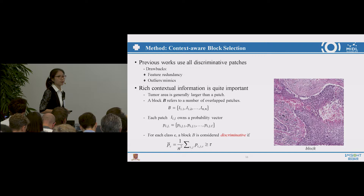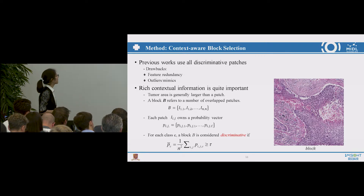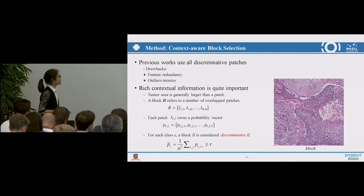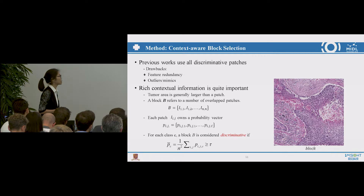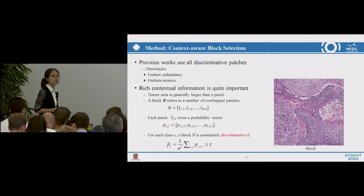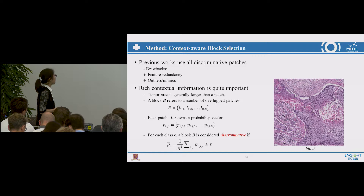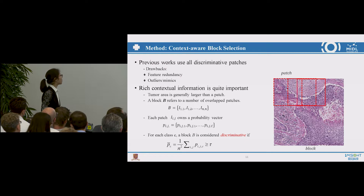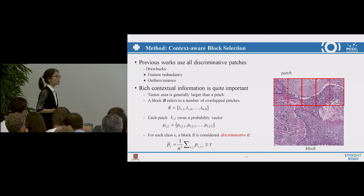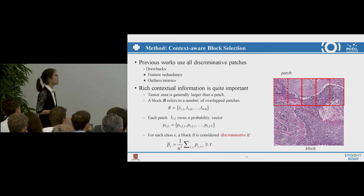Previous work considered patches with high probability as discriminative, tending to use all discriminative patches. But there are two major drawbacks: first, it might lead to feature redundancy due to overlapped patch regions during inference; additionally, some outliers or mimics with high probability will have negative effects on the quality of the global features. So in our method, we take the spatial information into account and introduce a term called 'block,' which refers to a number of overlapping patches. A block is considered discriminative only if the average probability within the block exceeds a threshold.